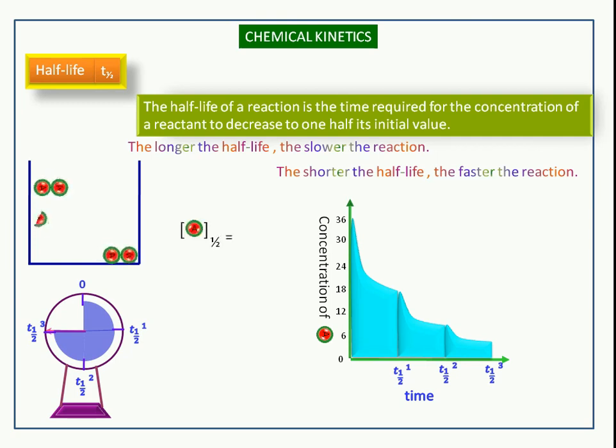The half of the concentration can be calculated by initial concentration divided by 2.